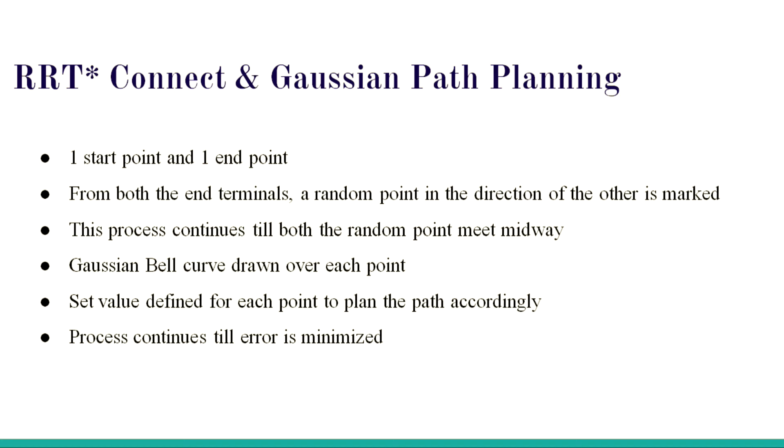RRT star is where there is a start point and end point. From the start point, a random point is selected in the direction of the end point. This way, error is minimized. But still, there is a high chance of error because there is no fixed route. In RRT star connect, the points start from start as well as end. From both directions, the mapping and point selection goes on till at the center the points meet. From these points, a Gaussian bell curve is plotted. There is a fixed value assigned to the Gaussian bell curve for a fixed point. The bell curve arranges itself in that way, and this continues till the error is minimum.